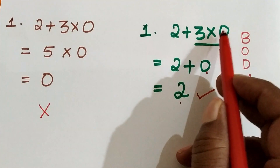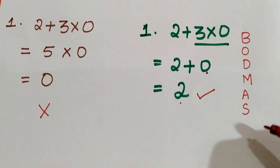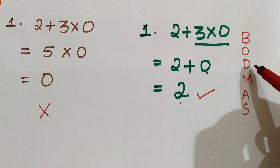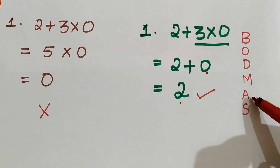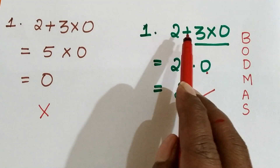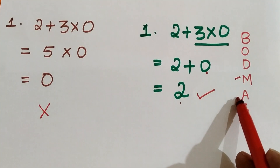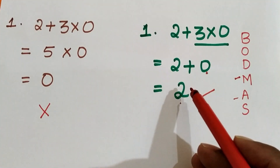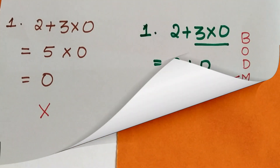Why do we have to do multiplication first? We have to use the BODMAS rule. What the BODMAS rule says is: first we have to do Bracket, then Division, then Multiplication, followed by Addition and Subtraction. In our question, we have multiplication and addition. So first we do multiplication: 3 times 0 is 0, then addition: 2 plus 0 is 2. Don't make this mistake — please rectify it, students.